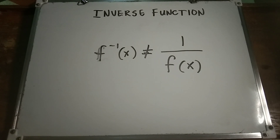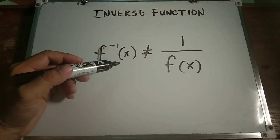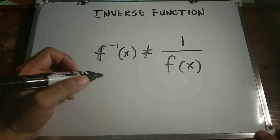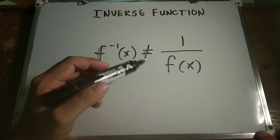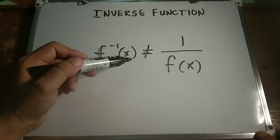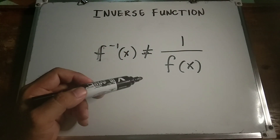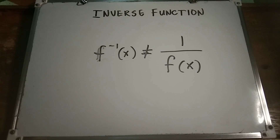Be careful with the notation for inverses — the negative 1 is not an exponent, despite the fact that it sure does look like one. When dealing with inverse functions, we've got to remember that the inverse of f of x is not equal to 1 over f of x. This is one of the more common mistakes that students make when first studying inverse functions.